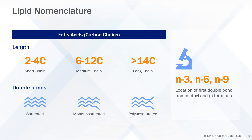In addition, fatty acids are classified by the position of the first double bond from the omega or N-terminal of the molecule. N3, N6, and N9 indicate that the first double bond is on the third, sixth, or ninth carbon from the N-terminal.